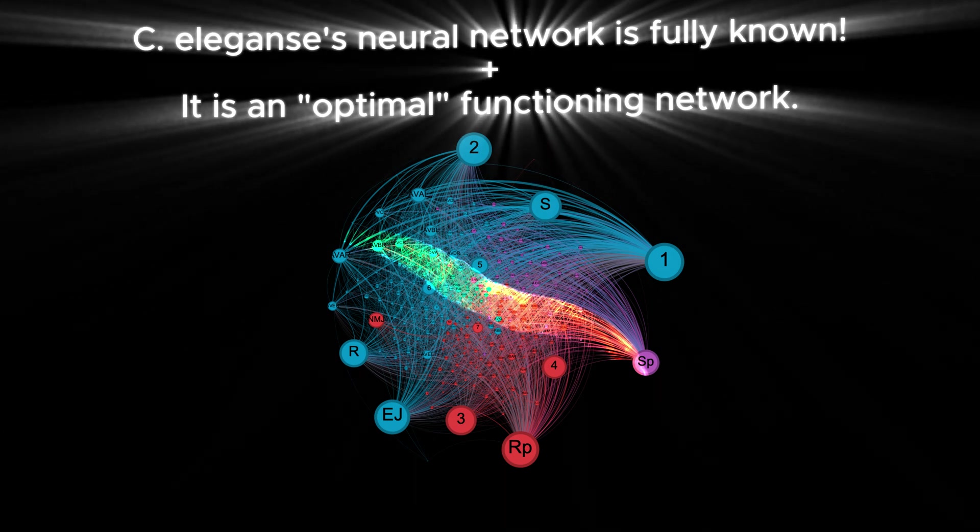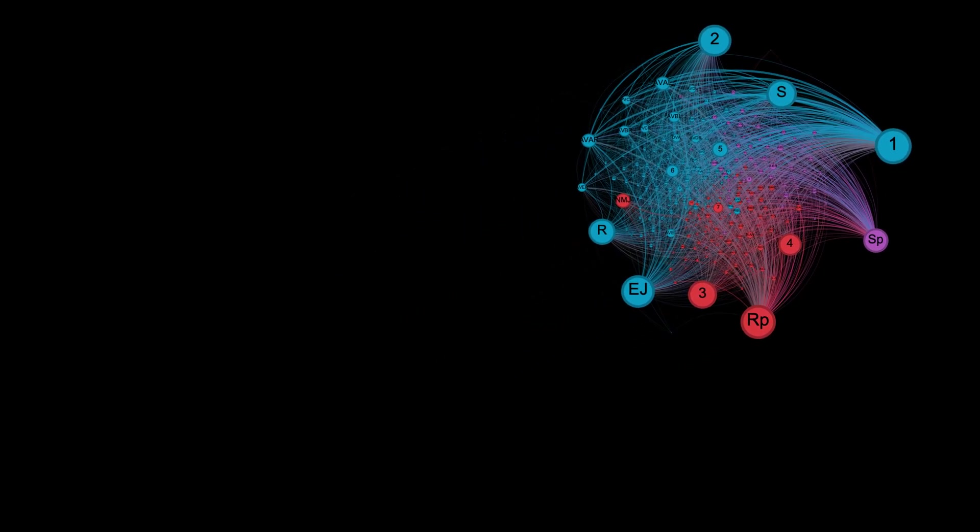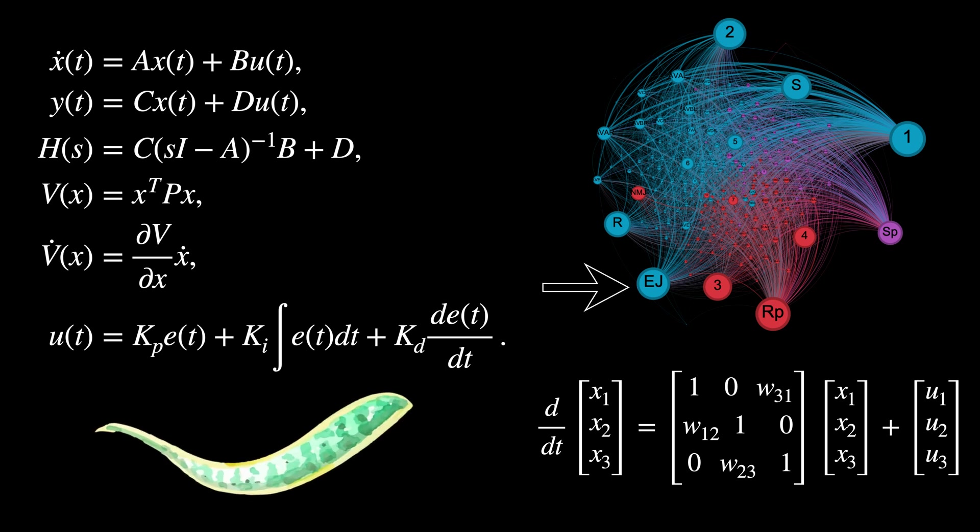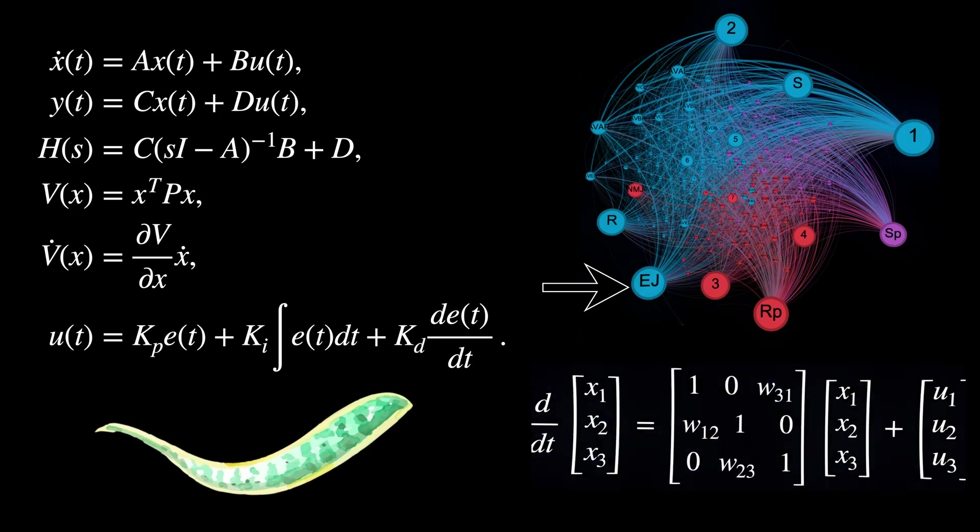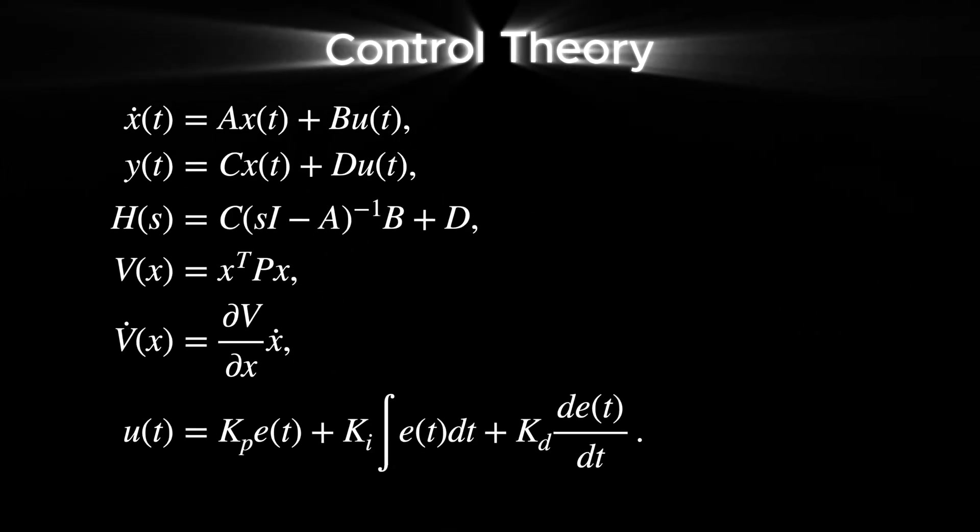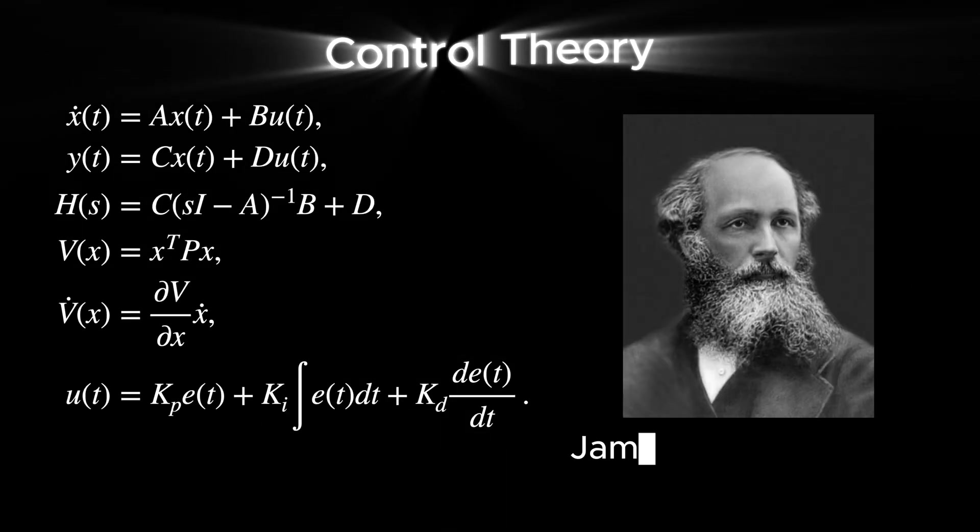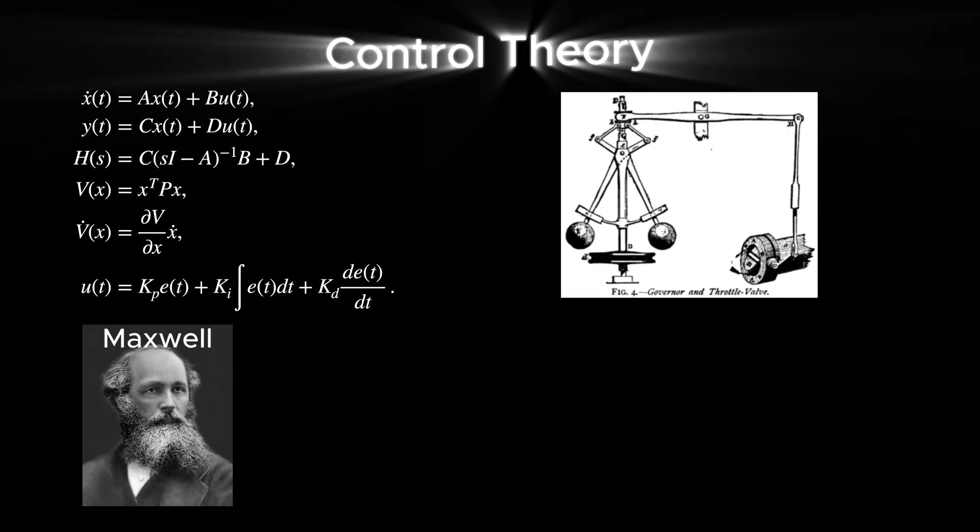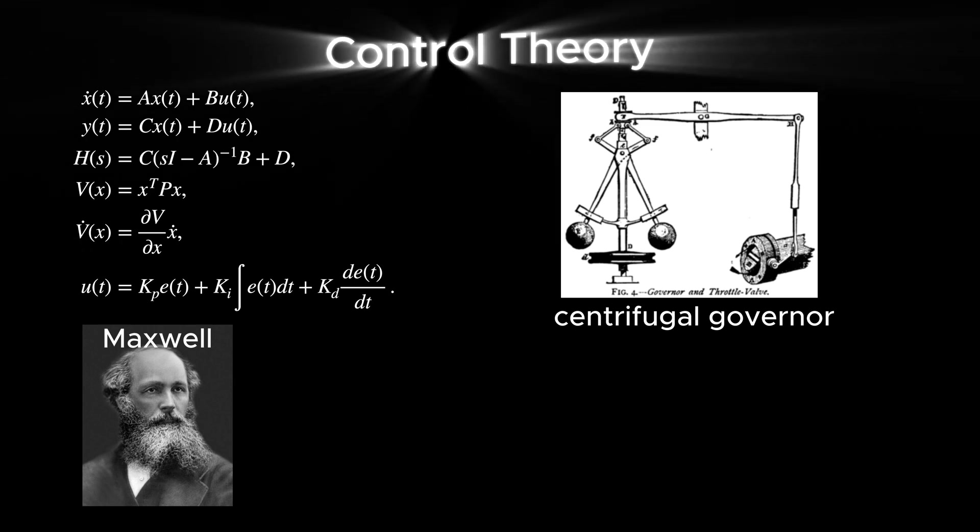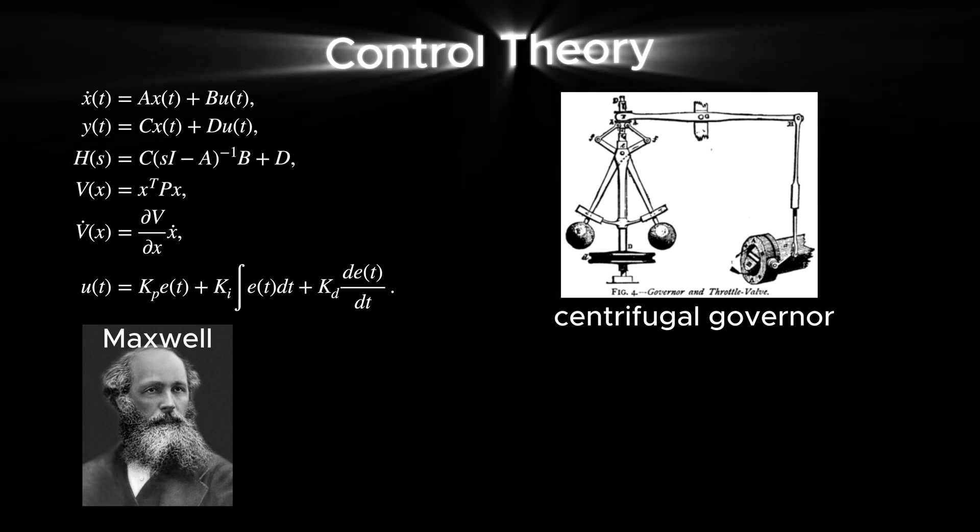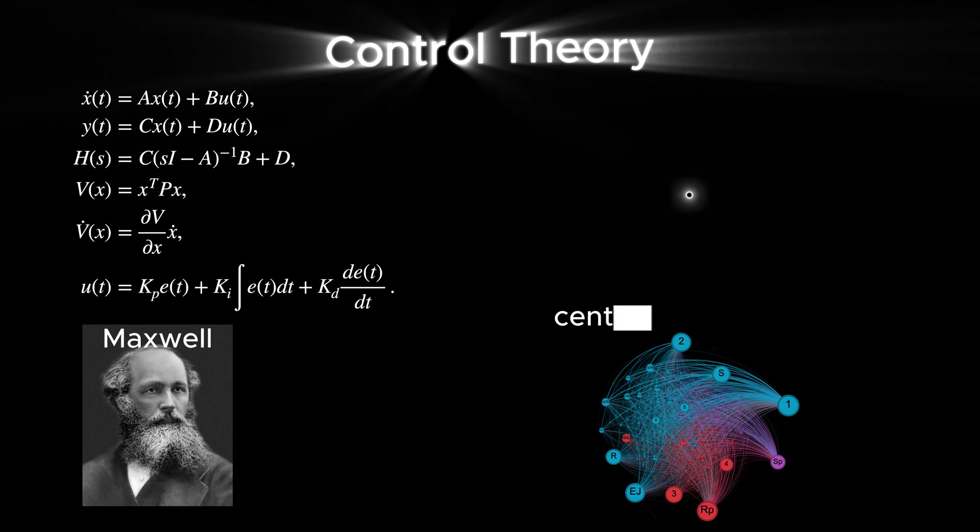Now, imagine we could predict the behavior of neurons in a worm by applying principles from physics and engineering. How do these tiny cells in neural networks work together to create motion, even in the simplest organisms like worms? A mathematical framework that can answer this question is the control theory, whose modern form was started in 1868 by physicist James Clerk Maxwell with the analysis of the centrifugal governor, a device that controls the speed of an engine by regulating its fuel flow.